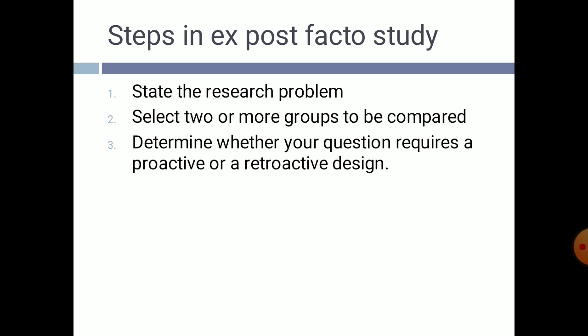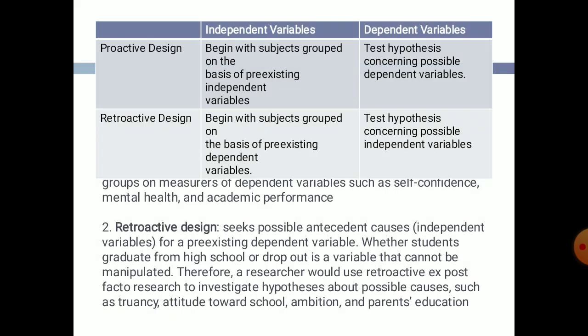Ex post facto has two types of design: proactive and retroactive. In a proactive design, you begin with subjects grouped on the basis of pre-existing independent variables and test hypotheses concerning possible dependent variables. In a retroactive design, you begin with subjects grouped on the basis of pre-existing dependent variables and test hypotheses concerning possible independent variables.